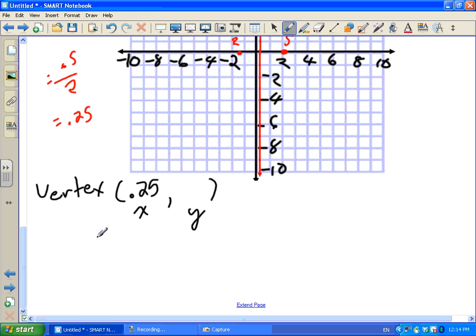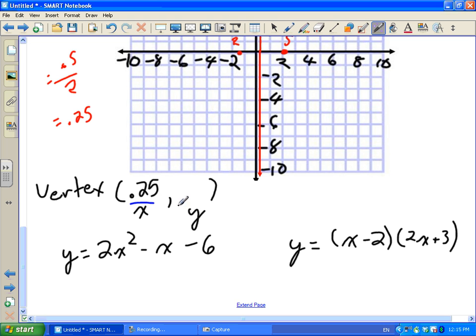So we have y is equal to 2x squared minus x, what was this, minus 6. And our factored form was y is equal to x minus 2, 2x minus 3, plus 3, I think. So we have our standard and our factored form. I'm going to substitute my x value for the x's in the standard form. And I'm also going to do it in the factored form just to prove that we're going to get the exact same y-coordinate.